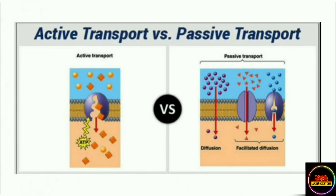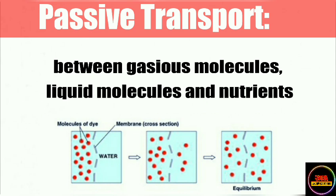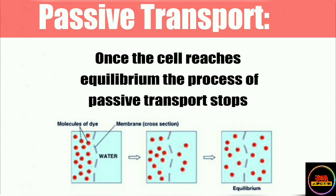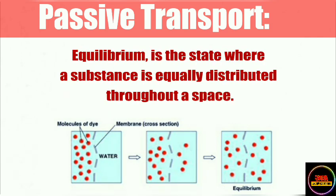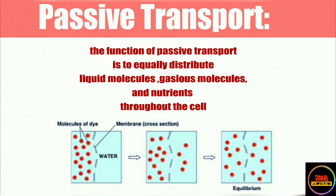The third difference concerns function. The function of passive transport is to maintain equilibrium — it is responsible for equally distributing gaseous molecules, liquid molecules, and nutrients in the cell. Equilibrium is the state where a substance is equally distributed throughout a space.